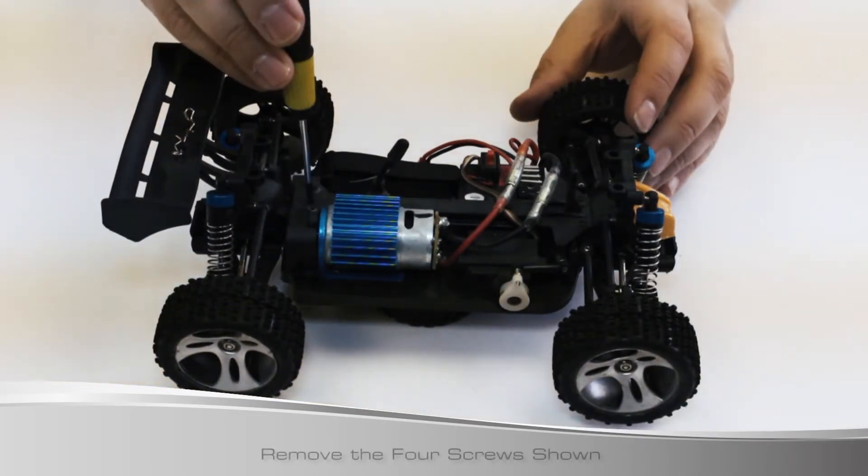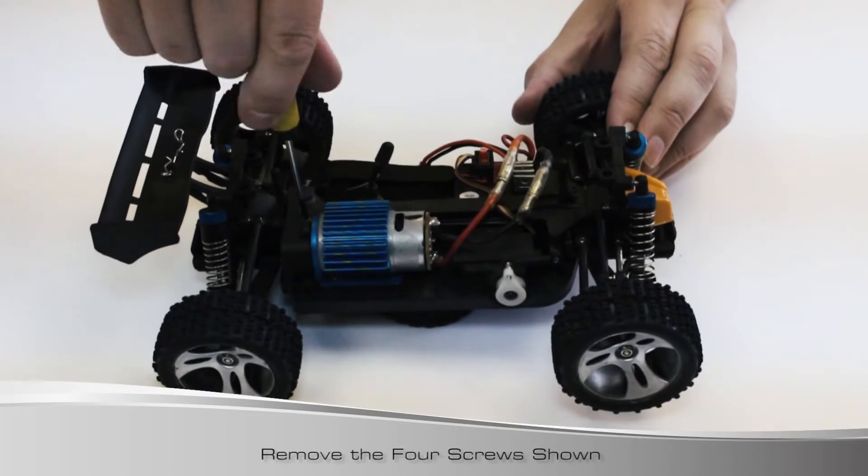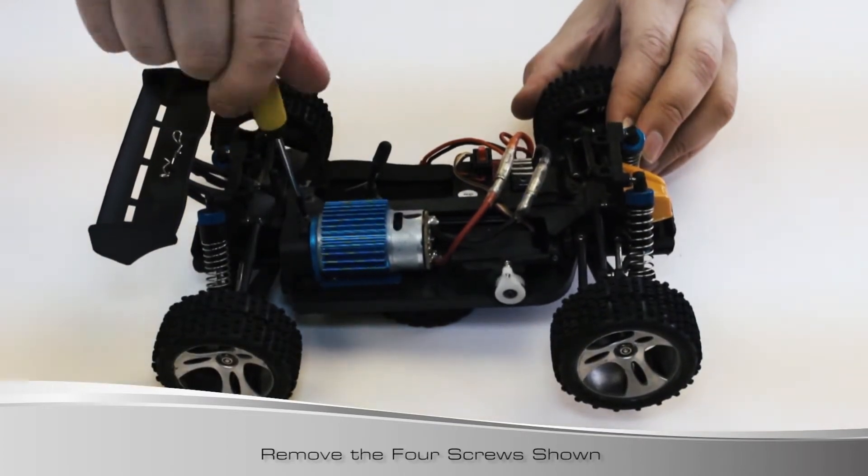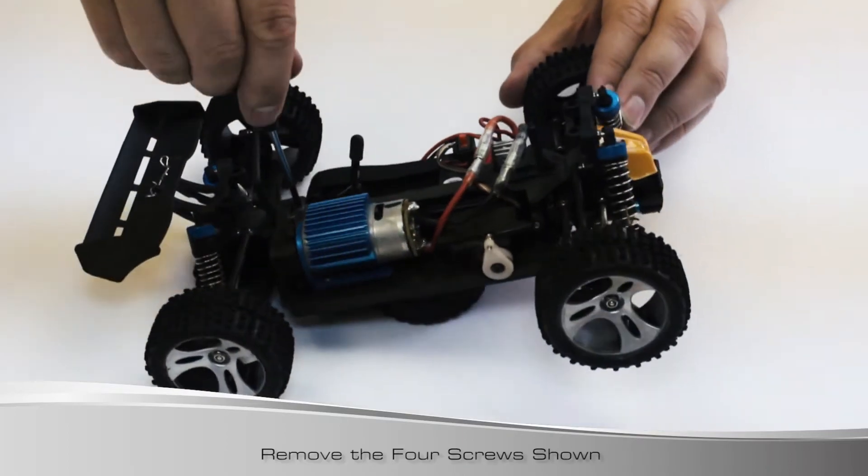We're going to show you how to take these covers off. First off, you're just going to need a Phillips screwdriver and there's four screws on the main cover back here that you're going to have to undo.